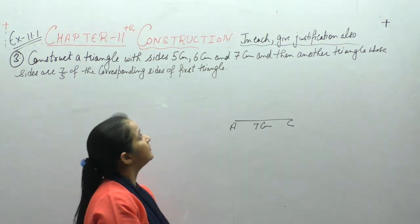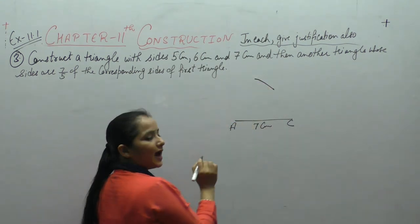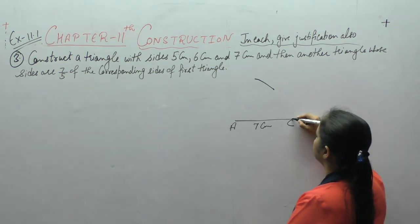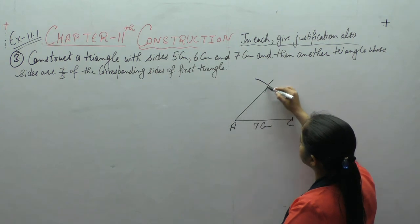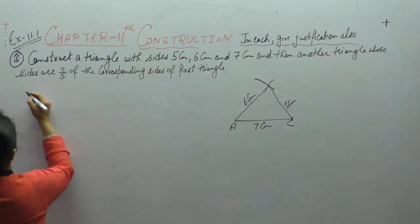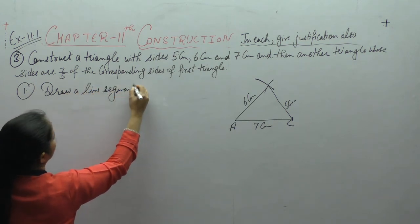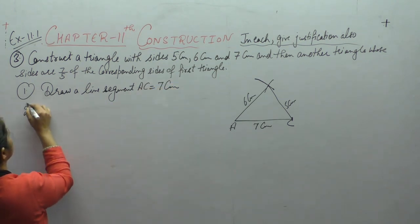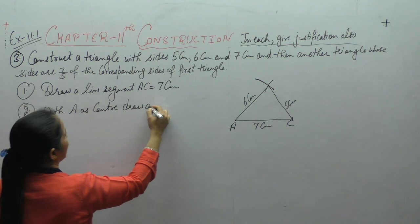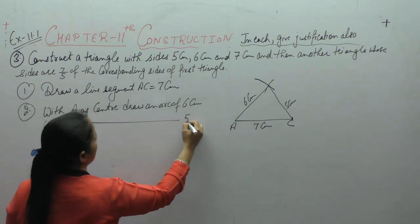Open a compass with radius 6 cm और A पे रखके हमने 6 cm की आर्क लगाई। Then open a compass with radius 5 cm and draw an arc from point C. With A as center, draw an arc of 6 cm; with C as center, draw an arc of 5 cm.